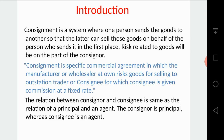The consigner is the manufacturer or wholesaler. He sends goods at his own risk for selling purposes to the consignee, who is mostly an outstation trader. The consignee sells on behalf of the consignor and receives commission as consideration. The commission rate and form are fixed in the agreement. The relation between consignor and consignee is the same as that of a principal and an agent.